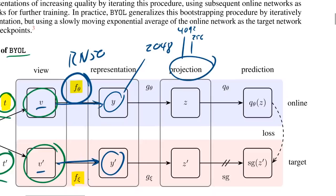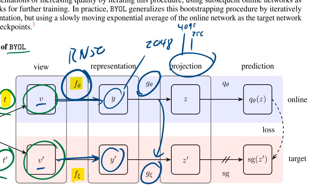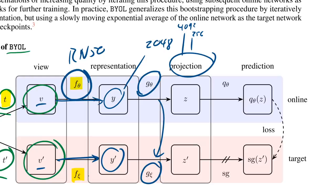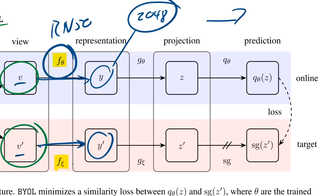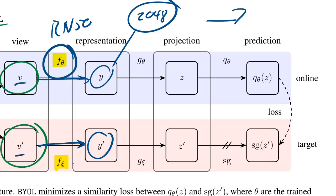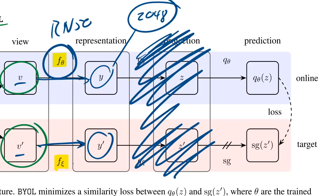The projection is a two-layer neural network that takes the 2048-dimensional ResNet-50 output, pumps it up to 4096, then compresses it down to 256 dimensions. There's a learned online projector, and the target projector is the exponential moving average of the online projector. It's probably here simply because it works — maybe making a different dimensionality helps, even though you could technically do everything in the 2048-dimensional space.